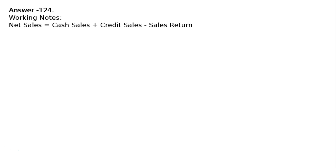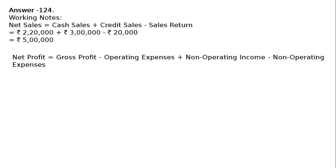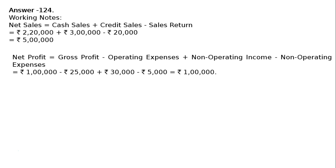Answer 124. In the working notes: Net sales = cash sales + credit sales - sales returns = rupees 2,20,000 + rupees 3,00,000 - rupees 20,000 = rupees 5,00,000. Net profit = gross profit - operating expenses + non-operating income - non-operating expenses = rupees 1,00,000 - rupees 25,000 + rupees 30,000 - rupees 5,000 = rupees 1,00,000.